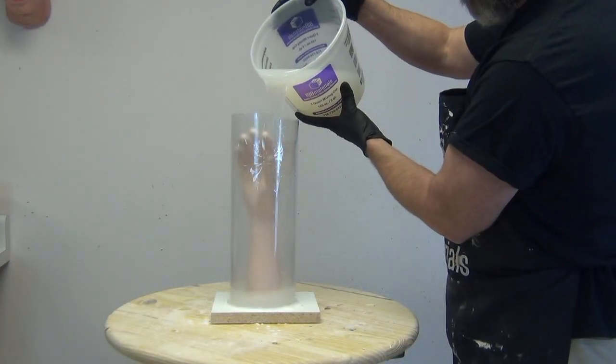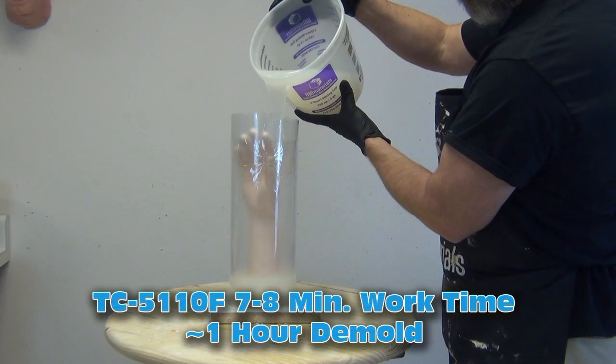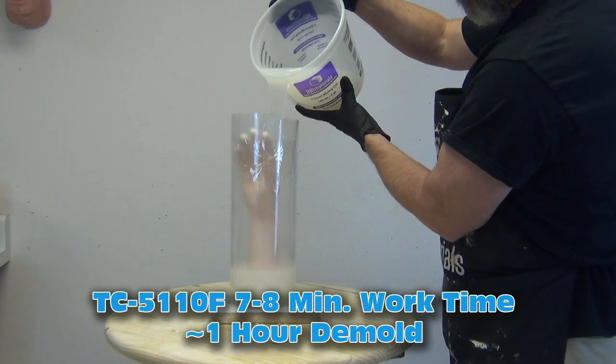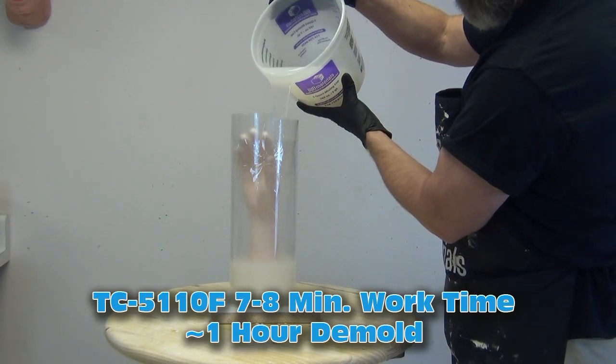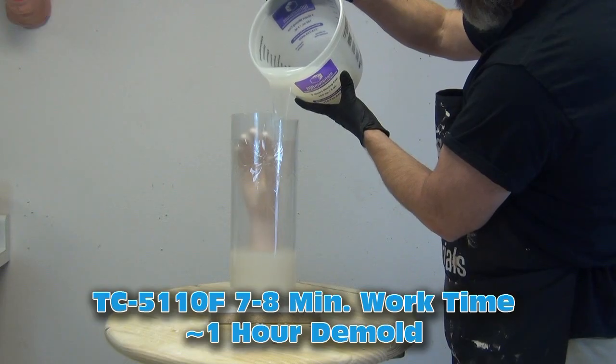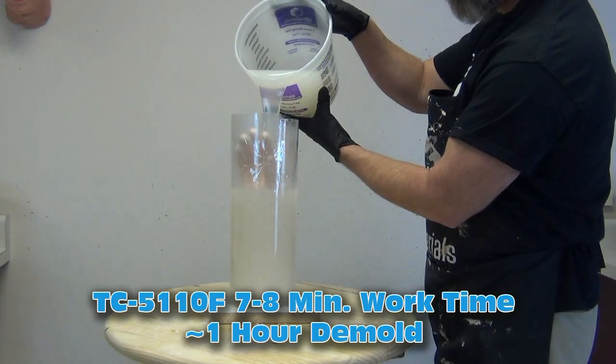Then I poured that with a very soft, stretchy silicone that is TC5110F. That's also a fairly fast-setting silicone that has about a seven to eight-minute working time and a one-hour demold.